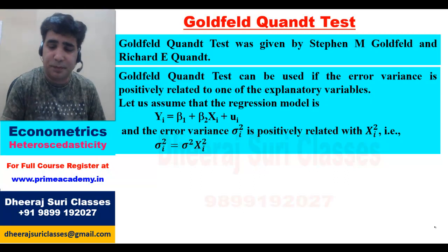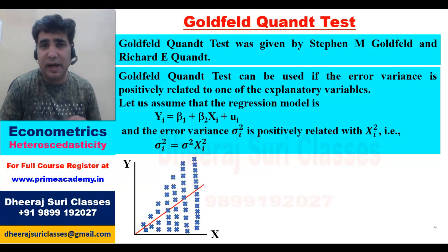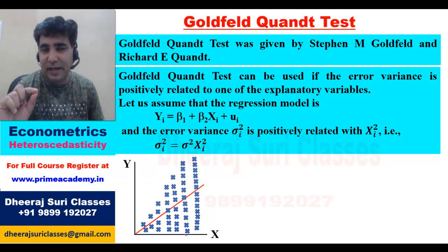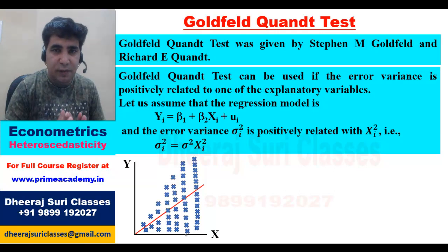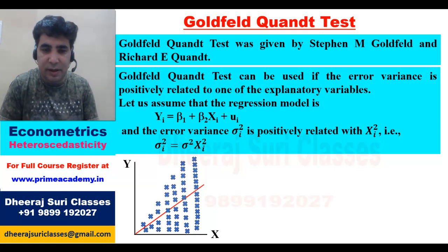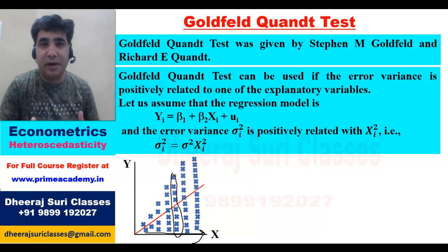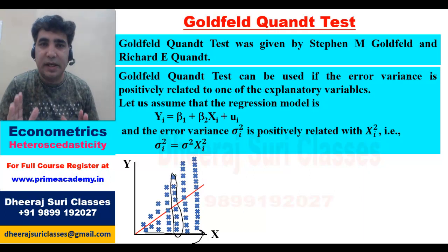We have to use σi². Looking at the diagram, the variance is growing. The red line is the line of best fit. For smaller values of x, the values of y are very close to this line of best fit. But as x increases, the variance is rising — the scatterness of the graph is increasing. Whenever variance increases with one of the explanatory variables, we use the Goldfeld-Quandt test.